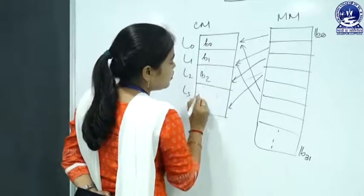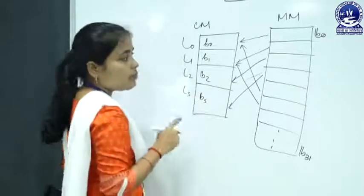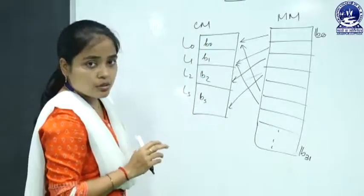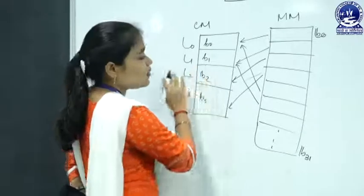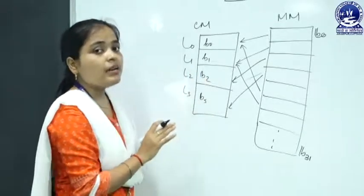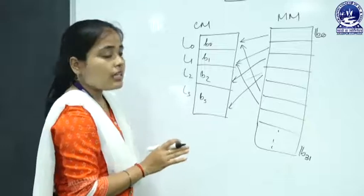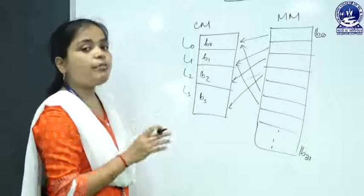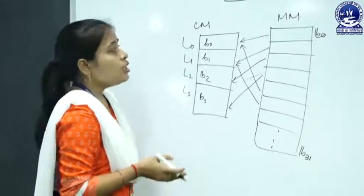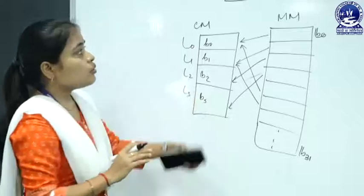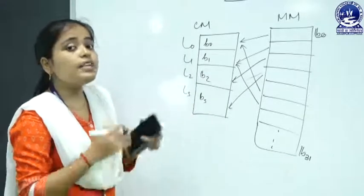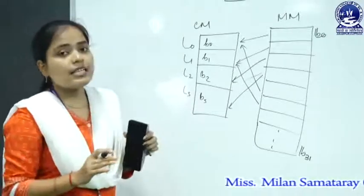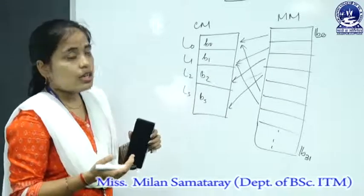When another block comes into the cache line to be placed, if the line is empty then it can easily be mapped into that line. But if a line contains another block, then you have to replace that block. Which block is going to be replaced is determined by the cache replacement algorithms.